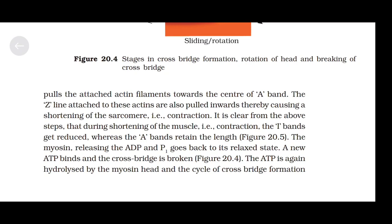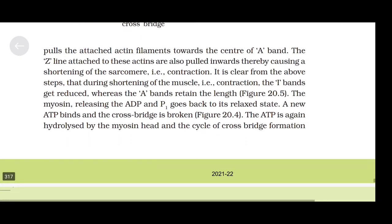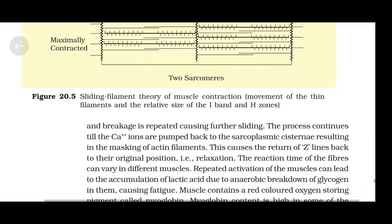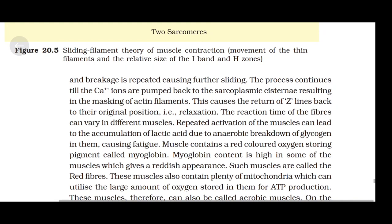During shortening of muscles, the I-bands get reduced whereas the A-bands retain the same length. The myosin, releasing ADP and Pi, goes back to its relaxed state. A new ATP binds and the cross bridge is broken. The ATP is again hydrolyzed by the myosin head and the cycle of cross bridge formation and breakage is repeated, causing further sliding. The process continues till the calcium ions are pumped back to the sarcoplasmic cisternae, resulting in the masking of actin filaments. This causes the return of Z-lines back to their original position — that is, relaxation.